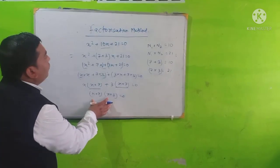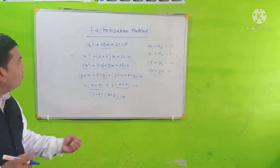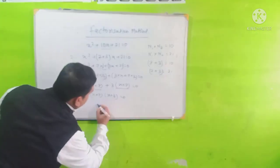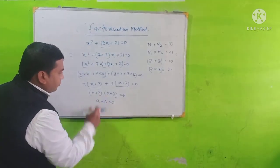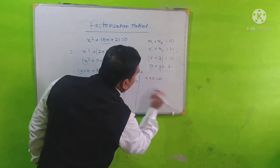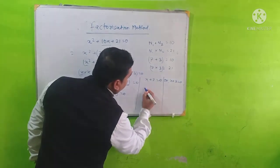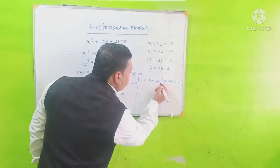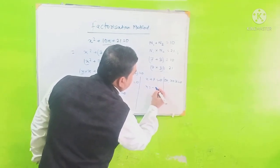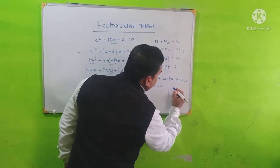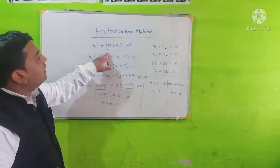This is the factored form of x squared plus 10x plus 21 equals 0. Now we find the roots. Since a times b equals 0 means either a equals 0 or b equals 0, we get x plus 7 equals 0 or x plus 3 equals 0. Therefore x is equal to minus 7 or x is equal to minus 3. These are the roots of x squared plus 10x plus 21 equals 0.